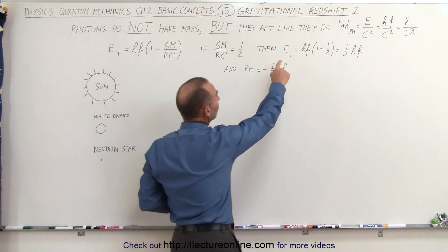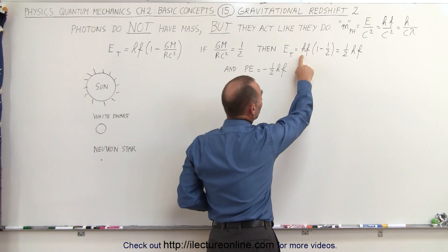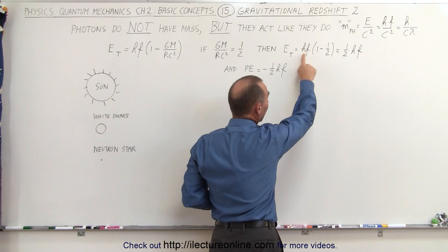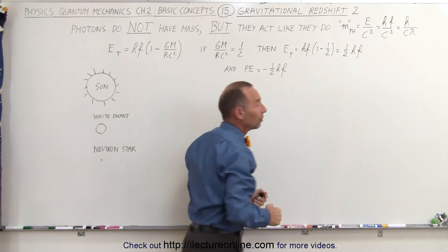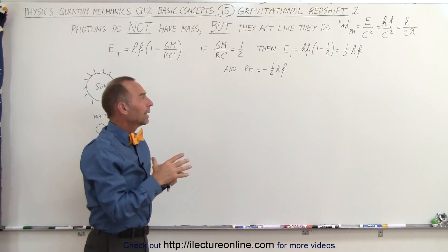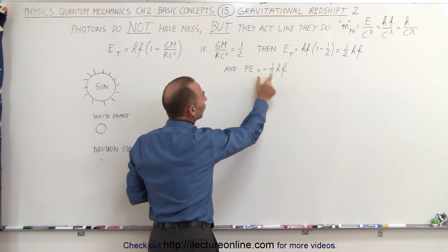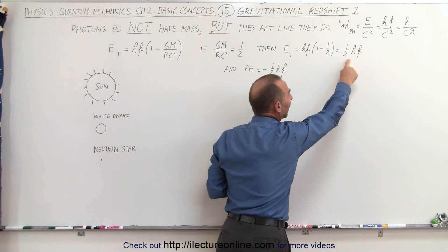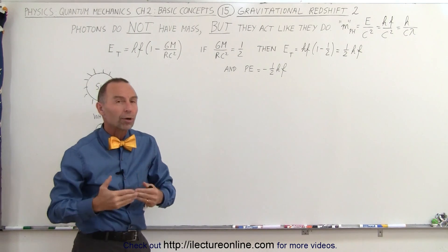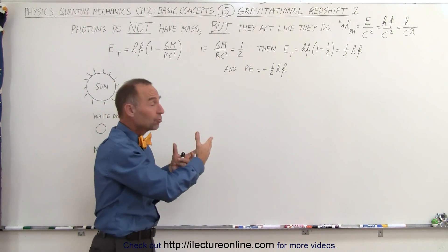That means the total energy will equal H times F times one minus a half, or only half HF. In other words, if the potential energy to overcome equals the total energy the photon has, the photon will no longer be able to get away from the surface.